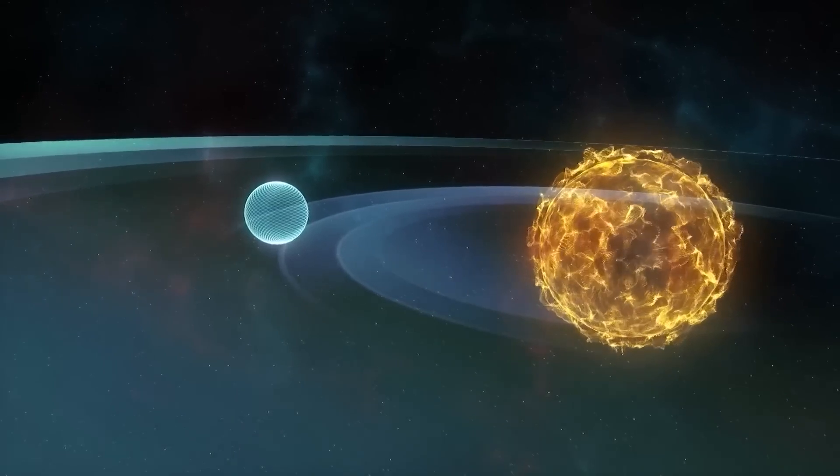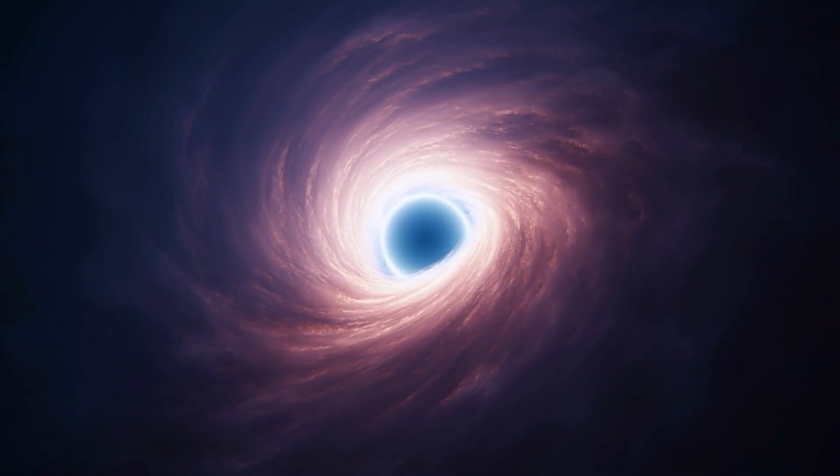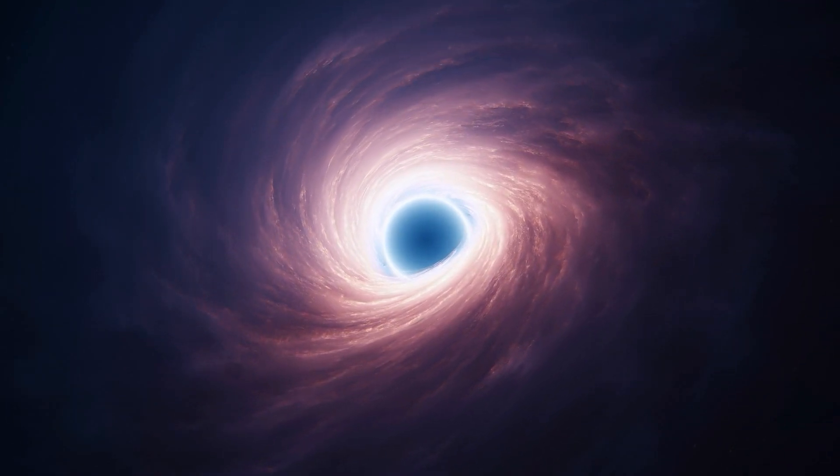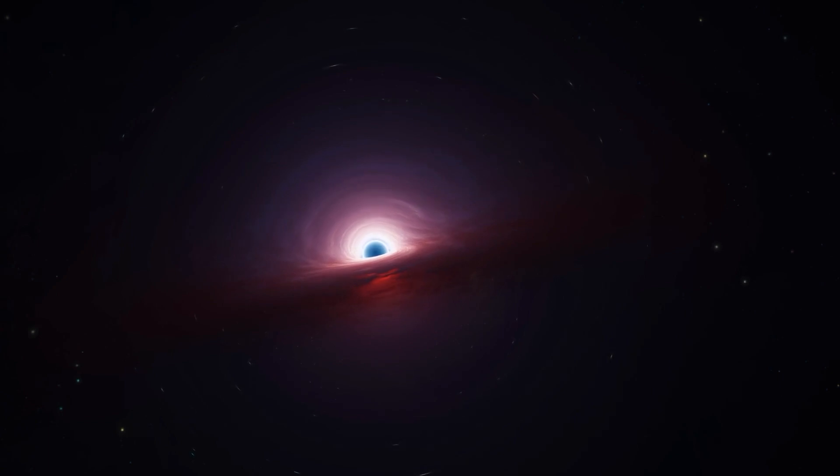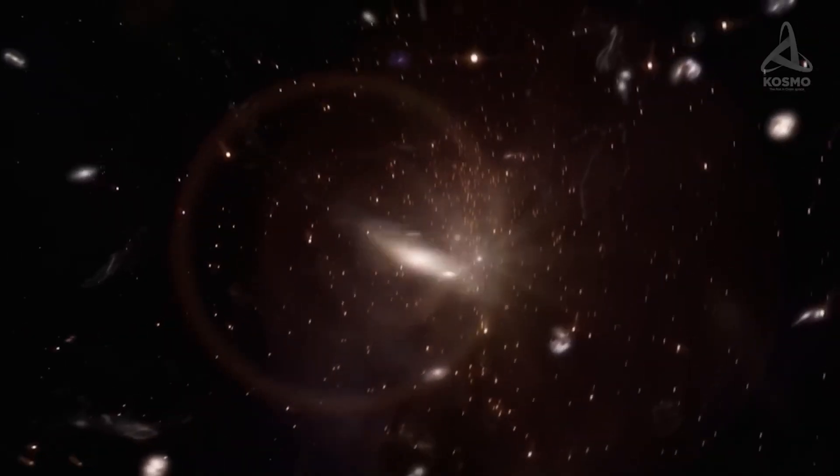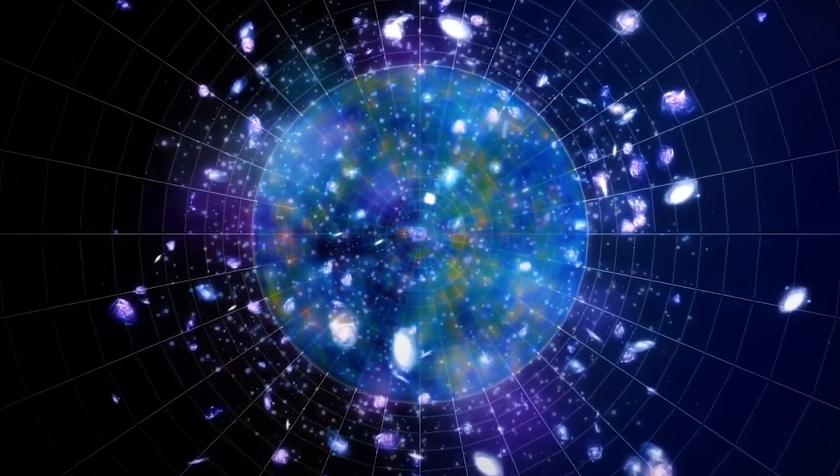Neutron stars are incredibly dense, packing several solar masses into a compact space. In contrast, black holes possess infinitely dense cores, exerting a gravitational pull so powerful that not even light can escape. These remnants offer insight into the mysteries of the cosmos and contribute to our understanding of the universe's evolution.